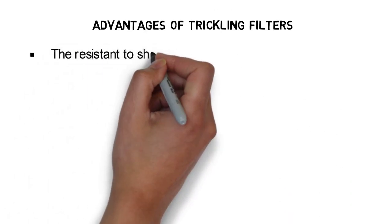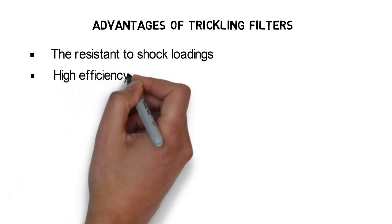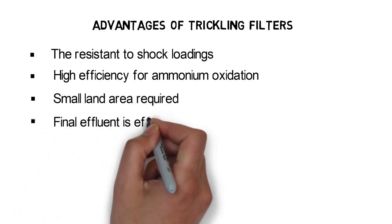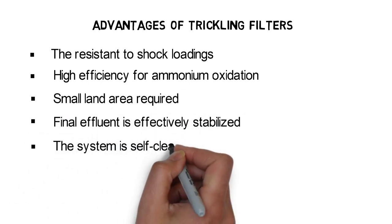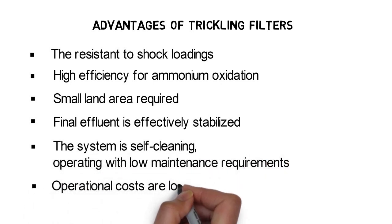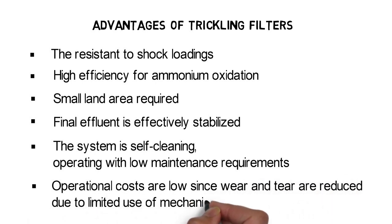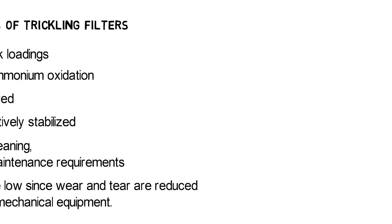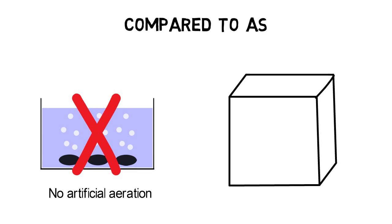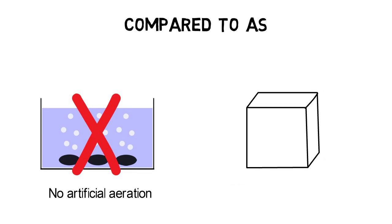Among the main advantages of this system, it is important to highlight the resistance to shock loadings, high efficiency for ammonia oxidation, small land area required, and the final effluent is effectively stabilized. The system is self-cleaning, operating with low maintenance requirements. Operational costs are low since wear and tear are reduced due to limited use of mechanical equipment. Furthermore, in comparison with similar methods such as activated sludge, trickling filters are significantly more cost effective as they don't require artificial aeration and have a smaller demand for operational space, resulting in cost reduction.